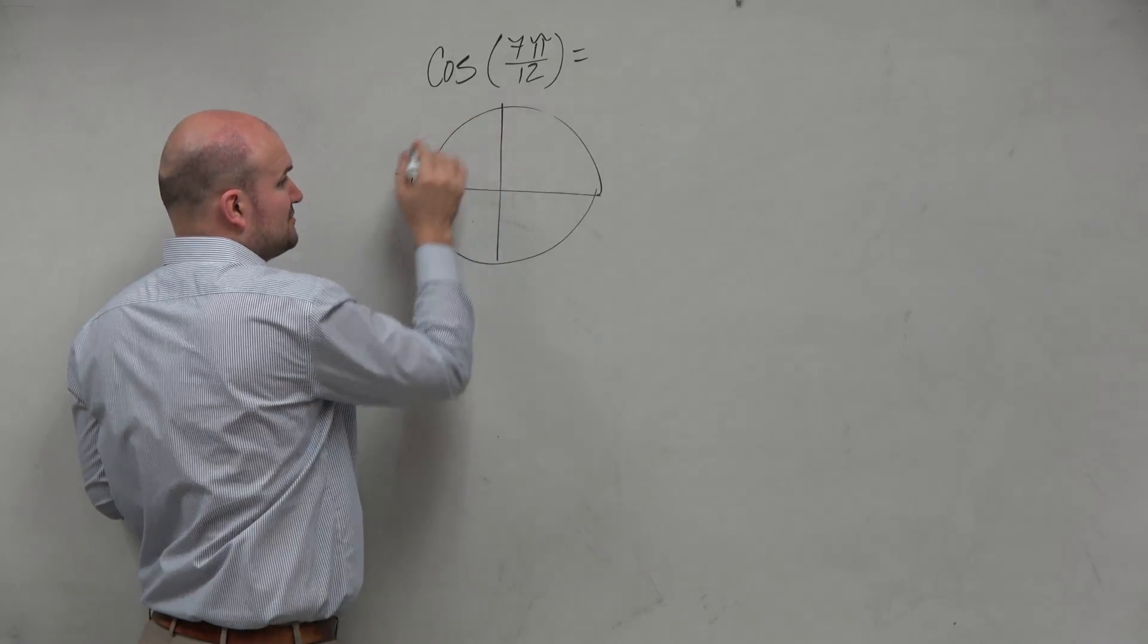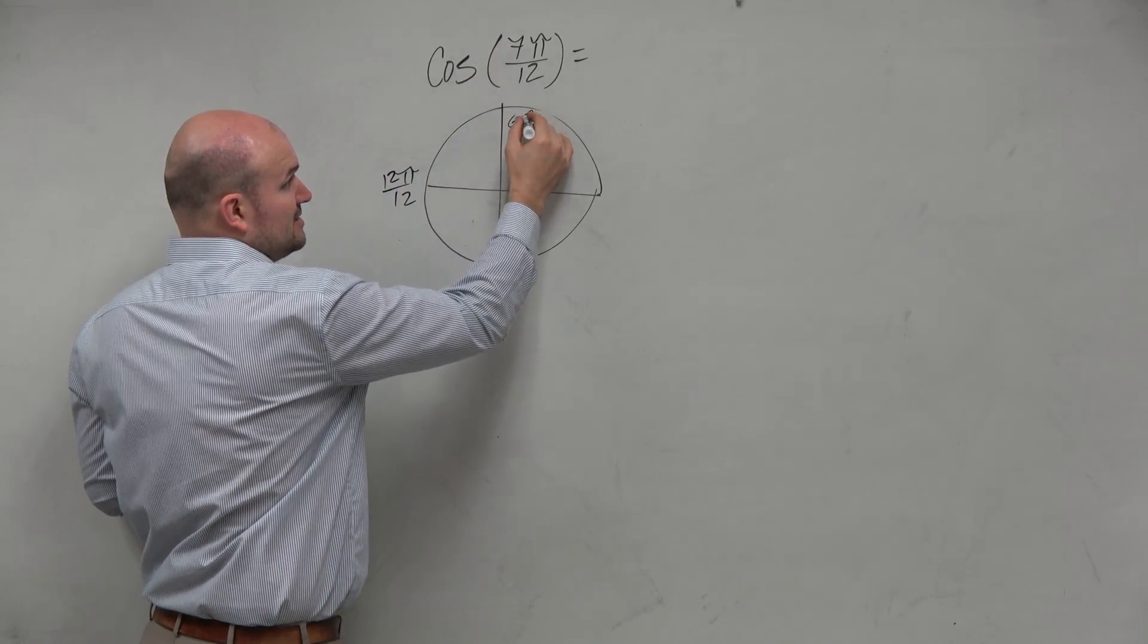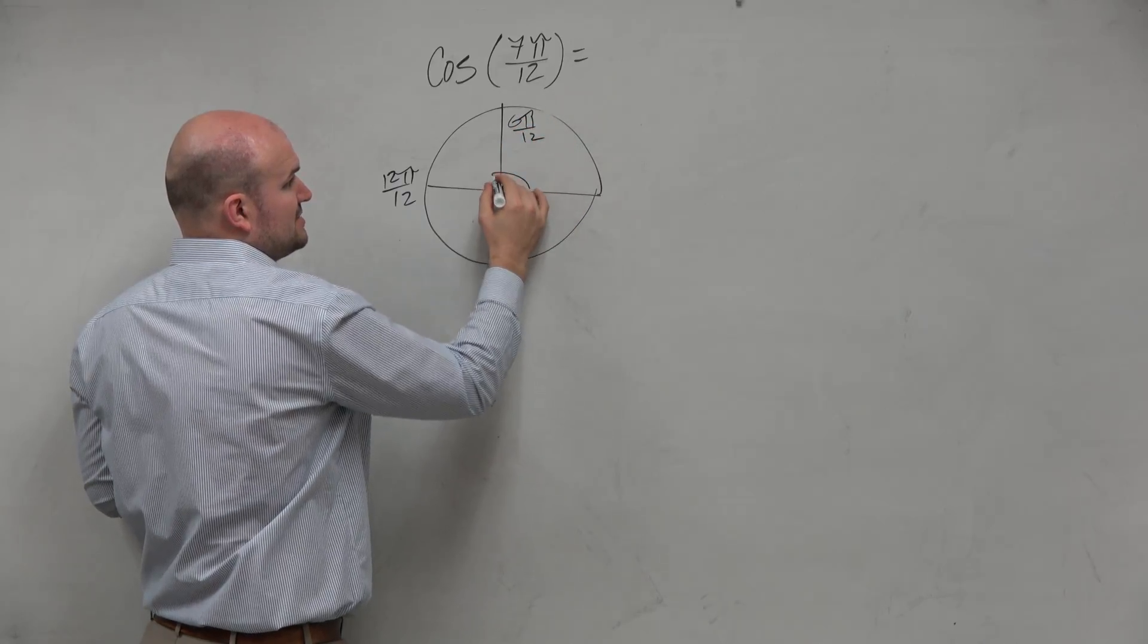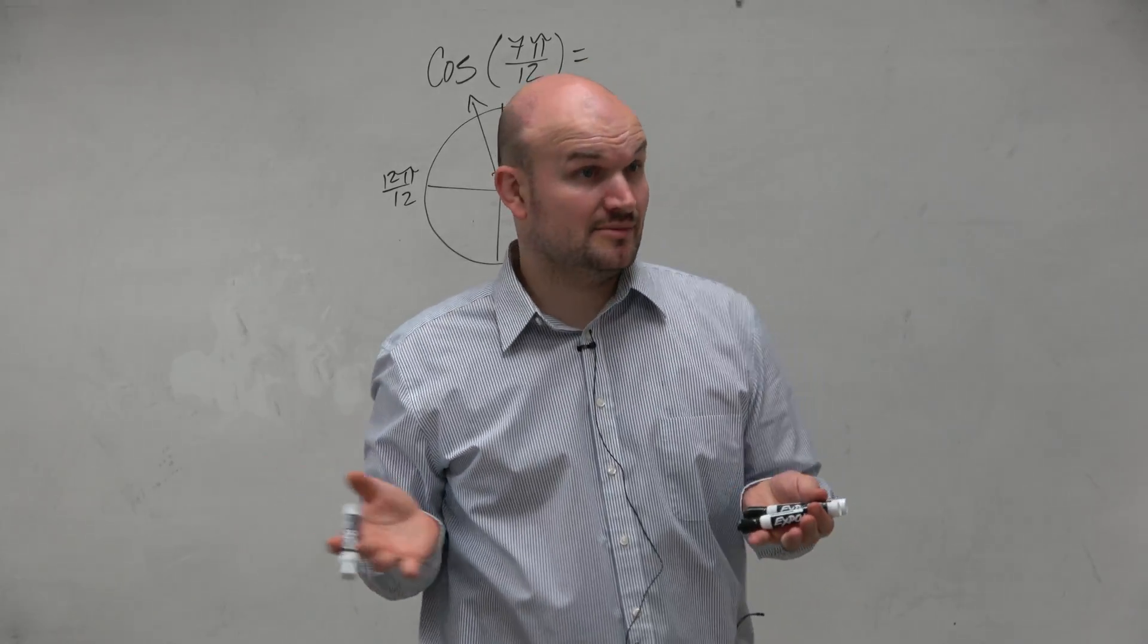halfway around the circle is π, which in terms of 12 is 12π over 12. Half of the circle, then, is 6π over 12. So therefore, this angle is somewhere over here, which would be in the second quadrant, which therefore, cosine is going to be negative.